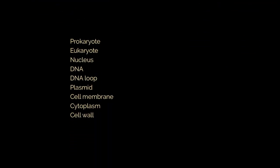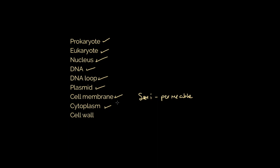To finish, let's review the key language. A prokaryote — 'before the nut' — is a bacterium or archaea containing a DNA loop and plasmids, with a cell wall. A eukaryote — a plant, animal, fungus, or protist — has a membrane-bound nucleus containing the genetic DNA that controls the cell's activities. The cell membrane is a semi-permeable structure separating the cell from its environment; cytoplasm is the cell fluid suspending organelles; and the cell wall is a feature of prokaryotic cells, distinct from plant cell walls.